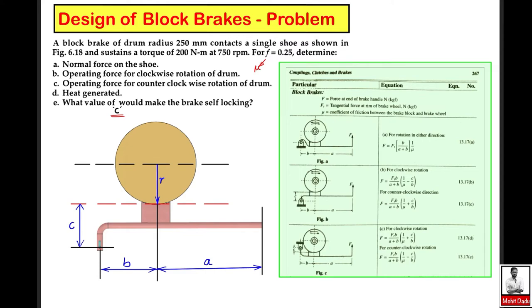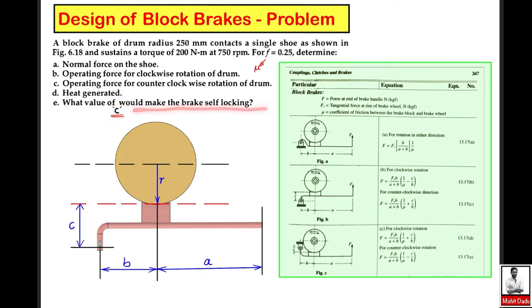We also have to calculate the operating force — the force which is required to be applied at the end of the lever to make contact between the surfaces for friction. This is asked for the clockwise rotation case and for the anti-clockwise rotation case. We also need to evaluate the heat generated due to friction, and find the value of c that would make the brake self-locking.